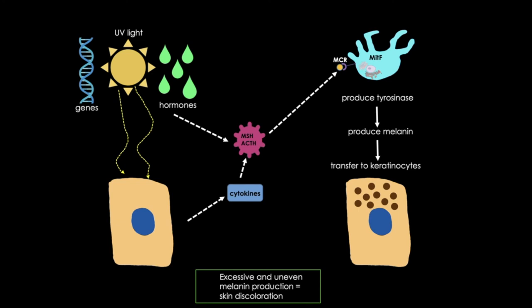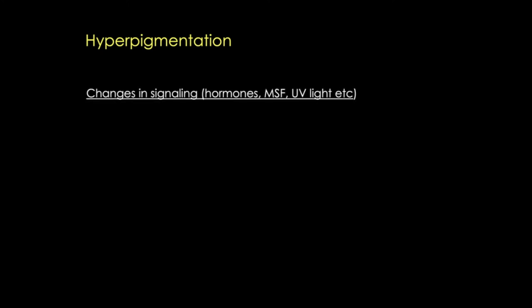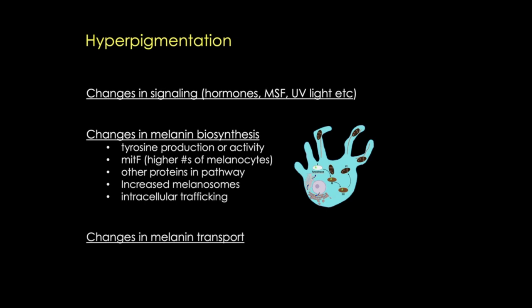Overstimulation of melanin biosynthesis results in hyperpigmentation disorders. These can result from changes in signaling hormones—melanocyte-stimulating factor, UV light, or other triggers. We can also have too much melanin from changes in the melanocyte or the melanosome. Changes can occur at any step of the pathway, including transport. Whether you have overactive melanocytes, a faster rate of melanosome transfer, or increased numbers of melanocytes, this results in more melanin in the skin—as a localized or more generalized effect.